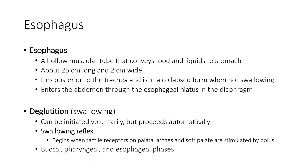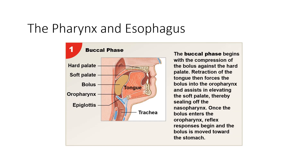There are three phases of the swallowing reflex: the buccal, pharyngeal and esophageal phases. The buccal phase begins with the compression of the bolus against the hard palate. The tongue then forces the bolus into the oropharynx and assists in elevating the soft palate, sealing off the nasopharynx. Once the bolus enters the oropharynx, the reflex responses begin and the bolus is moved towards the stomach.